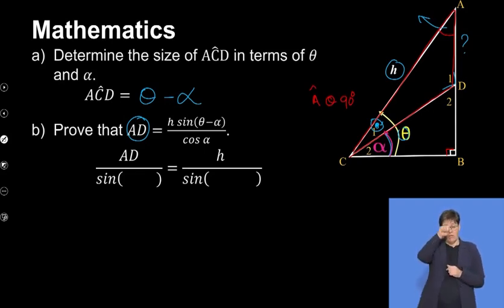So A, this angle here on top, is actually 90 minus theta, using the sum of angles of a triangle. Let's put it into our sine rule. We have AD over the sine of the angle across it. Across from AD was C1, and C1 we found to be theta minus alpha. Then the other pair we're going to be using is H over the sine of the angle across from it.